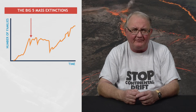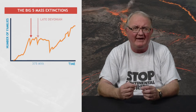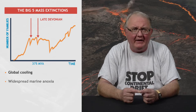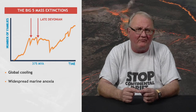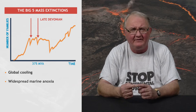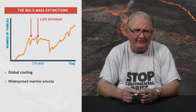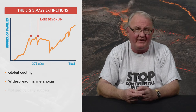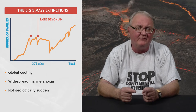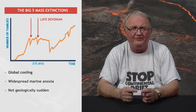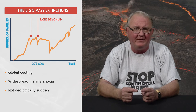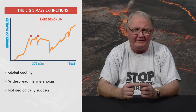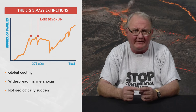The late Devonian extinction, about 375 million years ago, was again temperature-related, with global cooling associated with widespread marine anoxia. It did not occur at the end of the Devonian, but rather around the boundary between the Frasnian and Famennian stages, subdivisions of the late Devonian. It was probably not a geologically sudden event, and different groups, such as conodonts, reef-building organisms, and brachiopods, went extinct at different times about the Frasnian-Famennian boundary. This event was temperature-related, causing widespread extinction in tropical reefs and perireefal ecosystems.